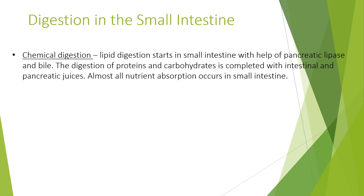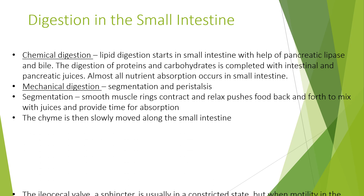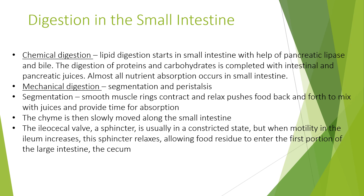Looking at digestion in the small intestine: chemical digestion — lipid digestion starts in the small intestine with the help of pancreatic lipase and bile, and the digestion of proteins and carbohydrates is completed with intestinal and pancreatic juices. Almost all nutrient absorption occurs in the small intestine. For mechanical digestion — segmentation and peristalsis — smooth muscle rings contract and relax, pushing food back and forth to mix with juices and provide time for absorption. Chyme is then slowly moved along, and when motility in the ileum increases, the ileal valve sphincter relaxes, allowing food residue to enter the large intestine.